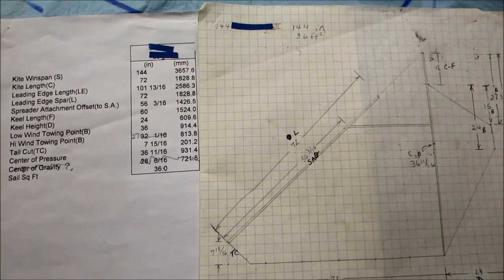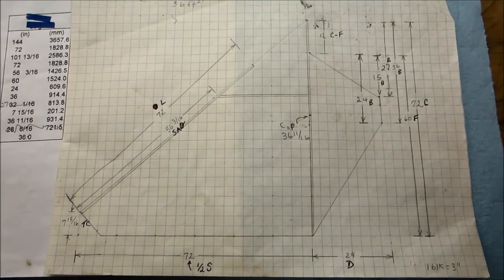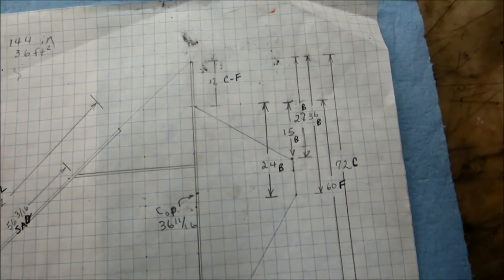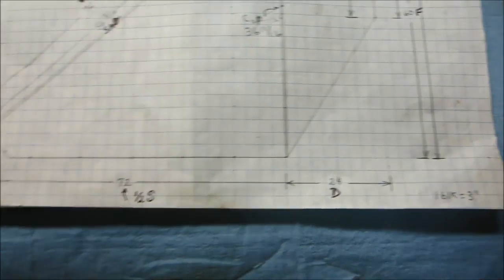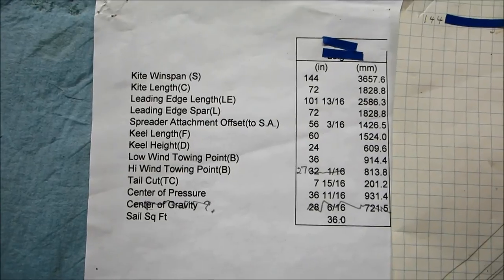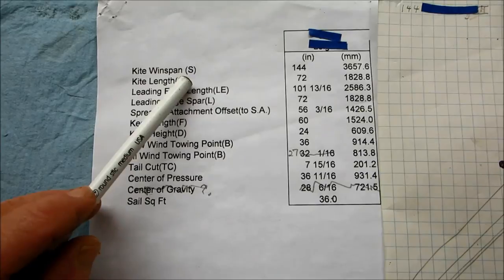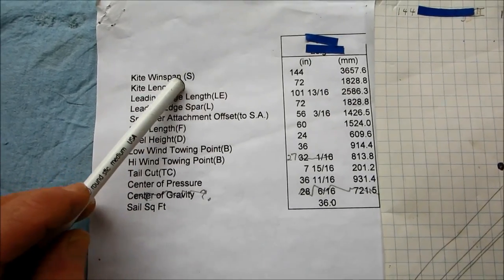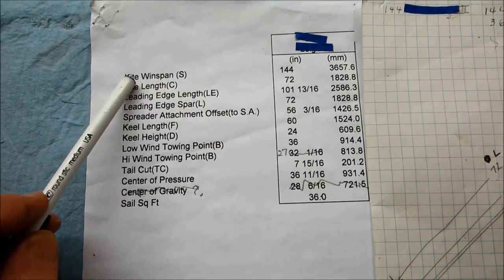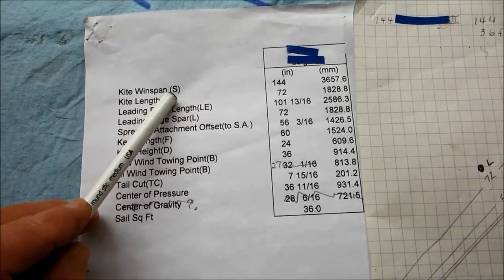If anybody's interested in the actual design of my 12-foot kite, here's the original design, and here is a printout of the dimensions. Each dimension, for example, wingspan is designated by an alphabet or something. Kite wingspan is 144, it's designated by an S.